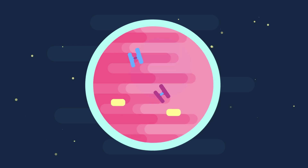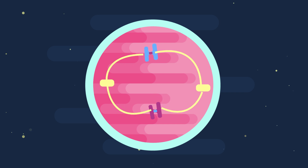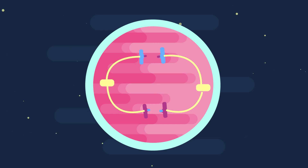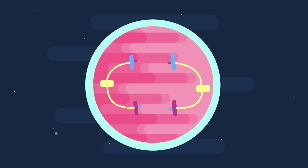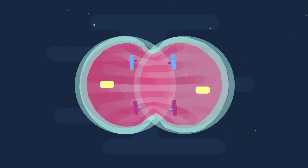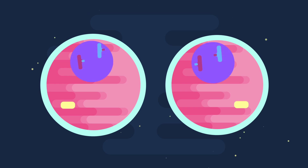The chromosomes become attached to spindle fibers, which run from one pole to another. The individual chromosomes line up at the equator of the cell. The spindle fibers shorten and the centromere divides, so that each chromosome becomes two separate chromatids. The cell membrane pinches to separate the two sets of chromatids into two cells.